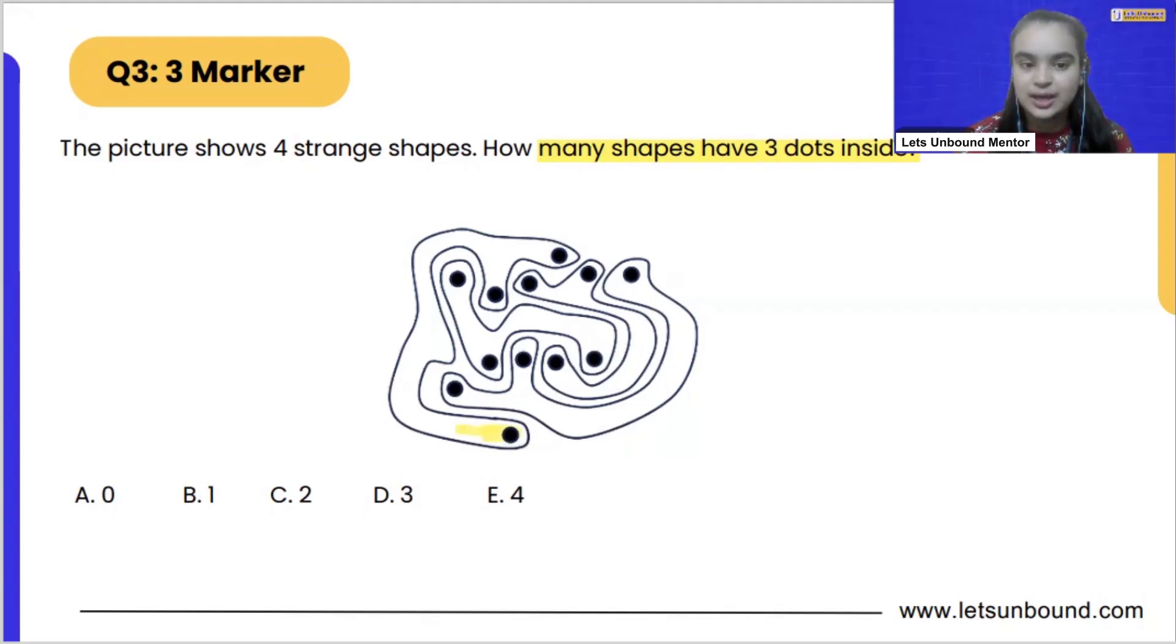So I am checking the outer shape, which is this one. I'm coloring inside the shape. So, this is our shape number one. Correct.